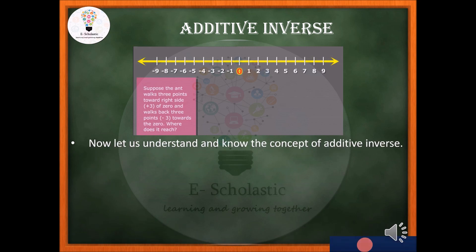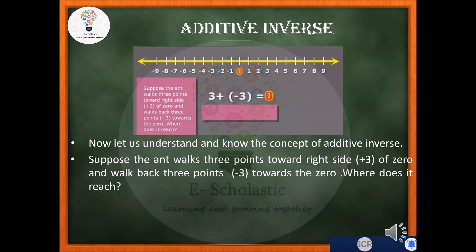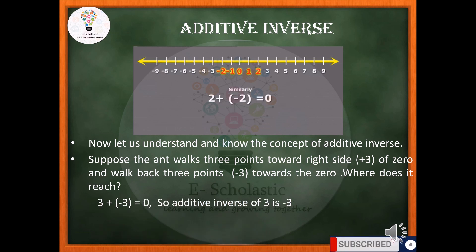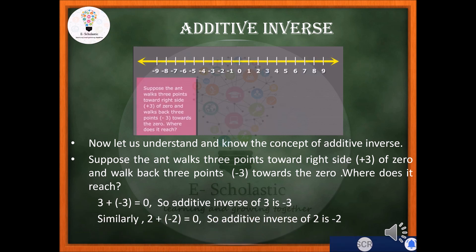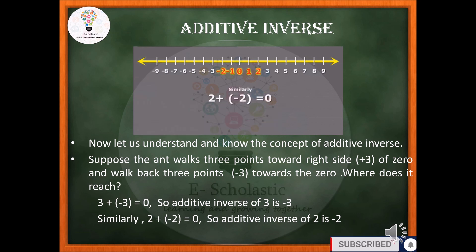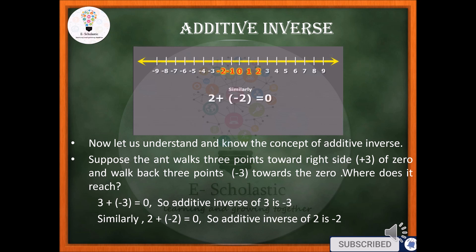Now let us understand the concept of additive inverse. Suppose the ant walks 3 points to the right (plus 3) and then walks back 3 points (minus 3). Three plus minus 3 gives you zero. So the additive inverse of 3 is minus 3. Similarly, 2 plus minus 2 gives you zero, so the additive inverse of 2 is minus 2. Reciprocating the sign of any integer gives its additive inverse — if positive, the additive inverse is negative, and vice versa — because the sum of two additive inverses is always zero.